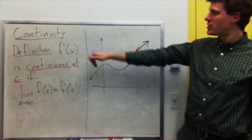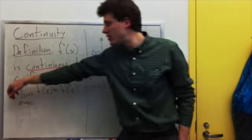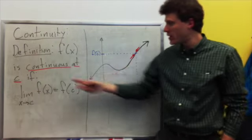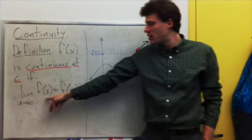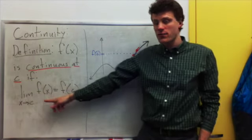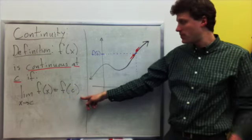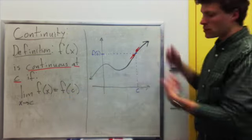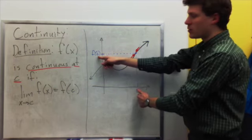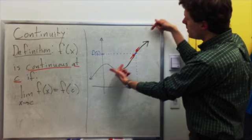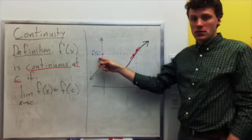So the definition is this: a function f of x is continuous at c — that's the full definition, continuous at a value c — if the limit as x approaches c of f of x is equal to the value of the function at c. Graphically, it looks like this: here's a function which at c is equal to f of c, and the limit as we approach that point is equal to the value of the function.